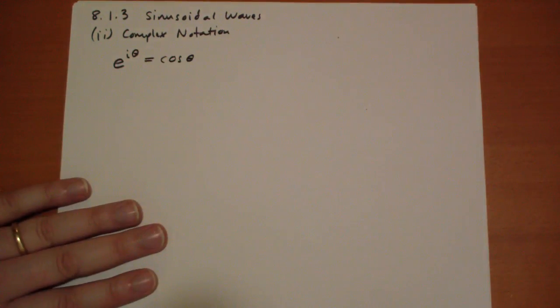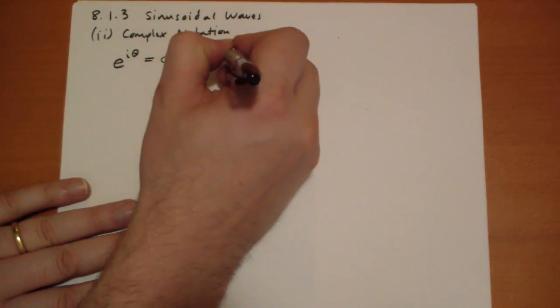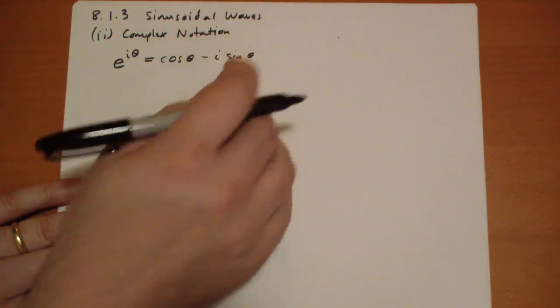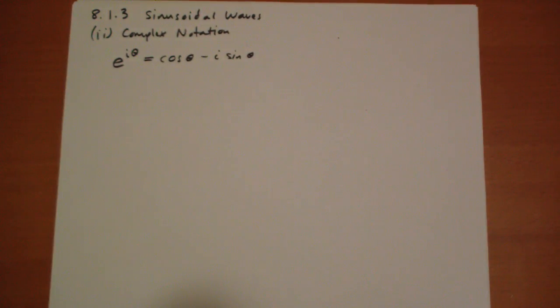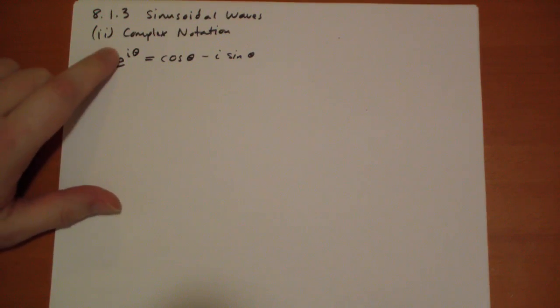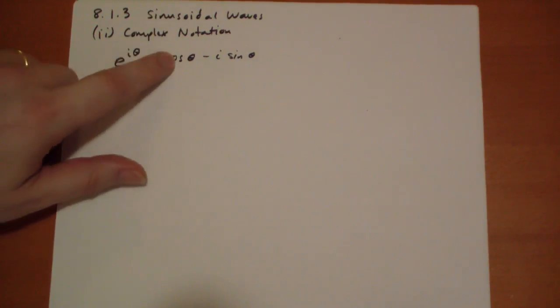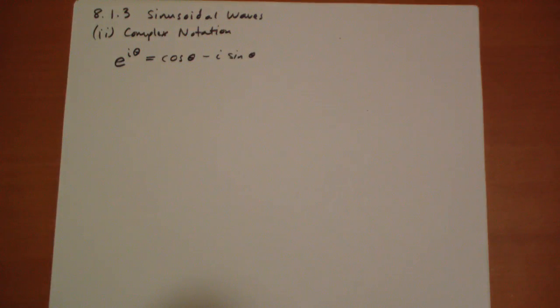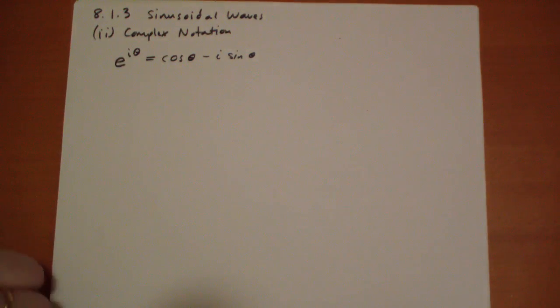So Euler's equation could be rewritten. Euler's formula could be rewritten in this way. E raised to an imaginary power is basically cosine minus the imaginary of the sine of the number that you have there.